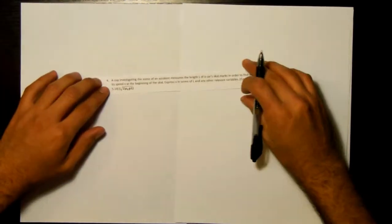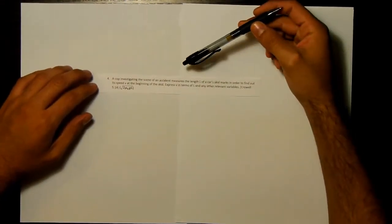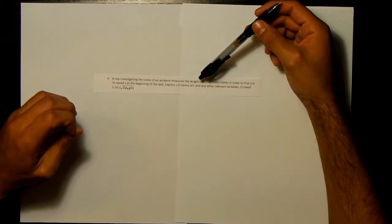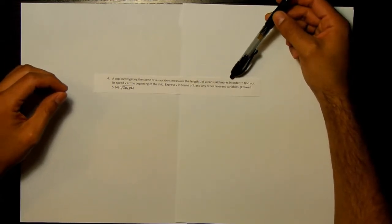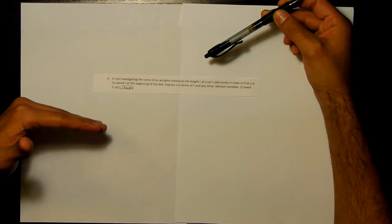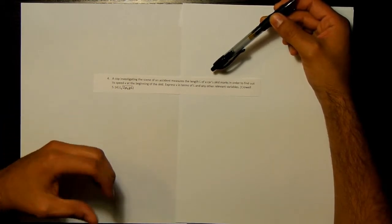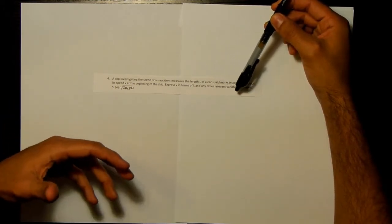Okay, everyone. So this is problem number four from your homework set number seven. Let me read you the problem. It says, a cop investigating the scene of an accident measures the length L of a car's skid marks in order to find out its speed V at the beginning of the skid. Express V in terms of L and any other relevant variables.